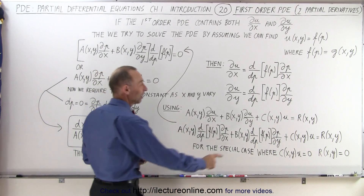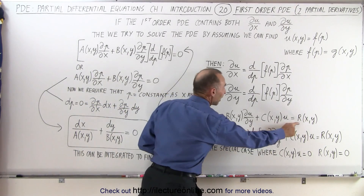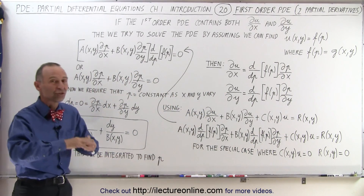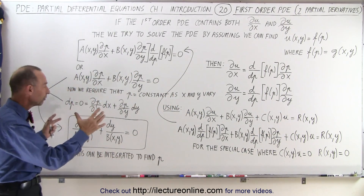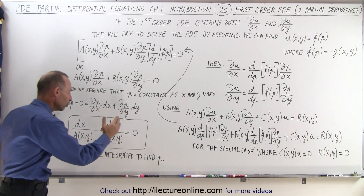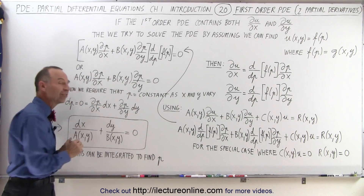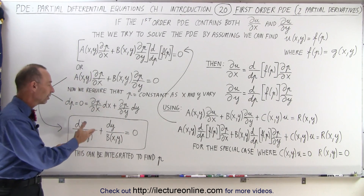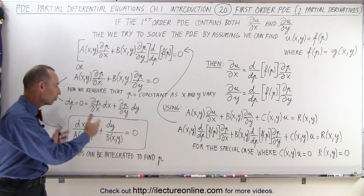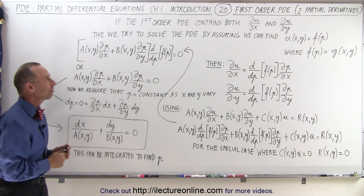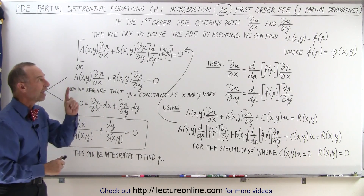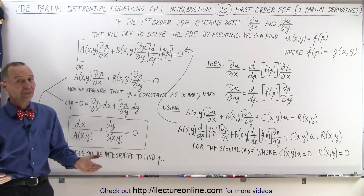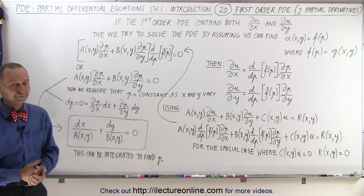In the special case, that's C and R equals zero. So this is the general approach of how we're going to solve this, and we're going to utilize this final result to show you how to solve partial differential equations that have both of the partial derivatives in them. And that is how it's done.